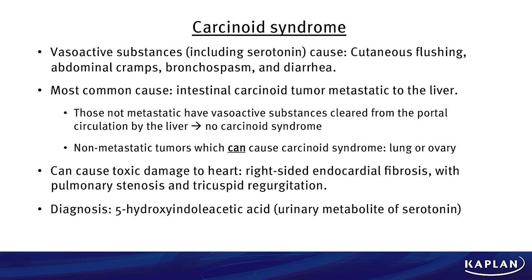Let's review carcinoid syndrome. Vasoactive substances, including serotonin, are secreted, and this causes cutaneous flushing, abdominal cramps, bronchospasm, and diarrhea. The most common cause is an intestinal carcinoid tumor which is metastatic to the liver. It's important to note that it's metastatic — those that are not metastatic have vasoactive substances that are secreted but are cleared from the portal circulation by the liver, so you don't have carcinoid syndrome. Non-metastatic tumors can produce carcinoid syndrome if they originate in the lung or in the ovary, because they don't undergo first-pass metabolism in the portal circulation.